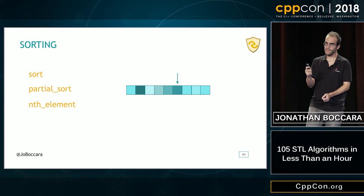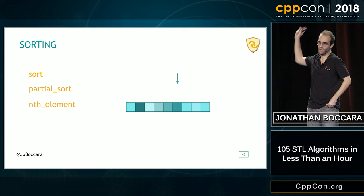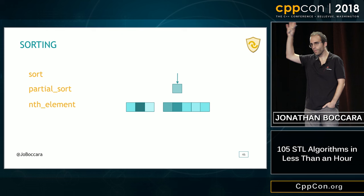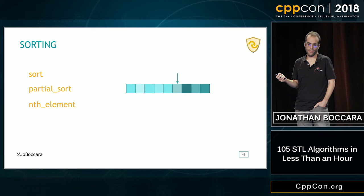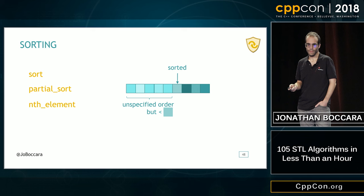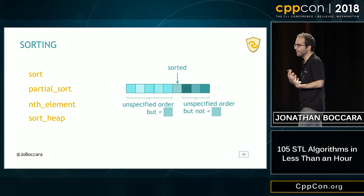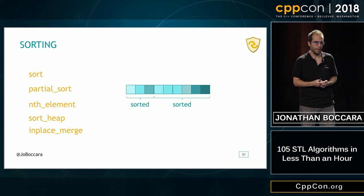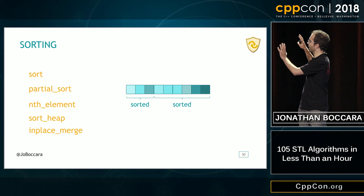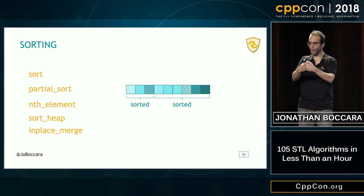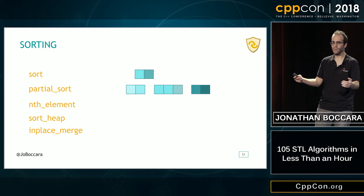To sort just one element, that's nth_element, which takes a begin, end, and a position, and puts at that position the element that would be there if the whole thing were sorted — with everything on the left smaller and everything on the right not smaller. There's also sort_heap which we've mentioned, and in_place_merge — the incremental step in a merge sort — which takes a collection that can be thought of as two sorted halves and combines them into one sorted collection.